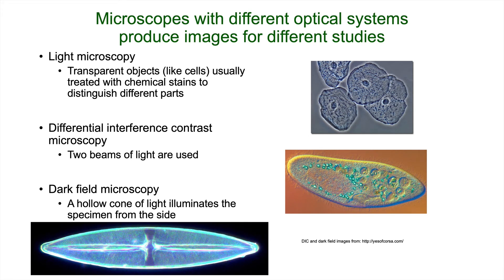The scope we use in the lab is a light microscope or bright field microscope. What we do is blast the specimen with light, and the specimen ends up being darker than the background. But oftentimes cells are transparent and light blows right through them, so a lot of times — these are human cheek cells — they've been stained to highlight the cell and make it contrast with the background. You can see the large nucleus and make out tiny specks of bacteria on the surface.